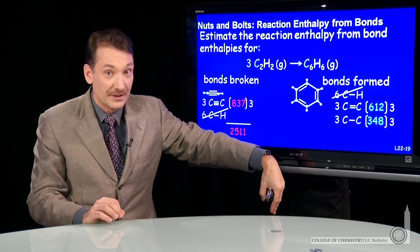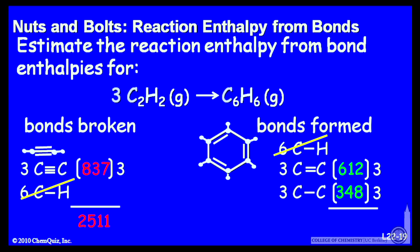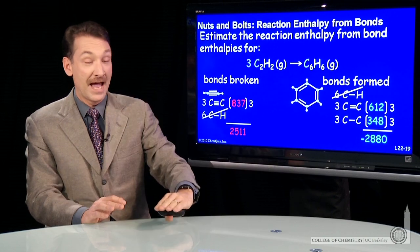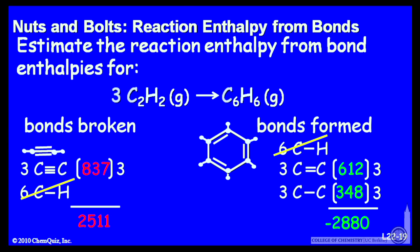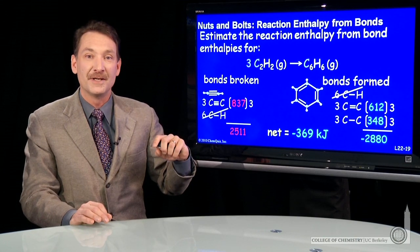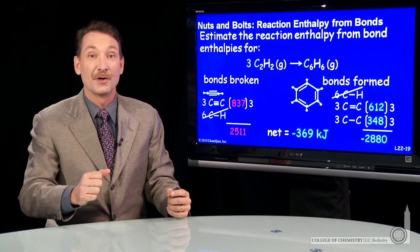The energy I get back when the bonds are formed is the sum of the benzene bonds: 2,880 kJ. So I put in about 2,511 kJ and get back about 2,880 kJ, giving a net release of around 369 kJ when this reaction occurs. Just by knowing a few bond enthalpies, I can calculate enthalpies for a wide variety of chemical reactions.